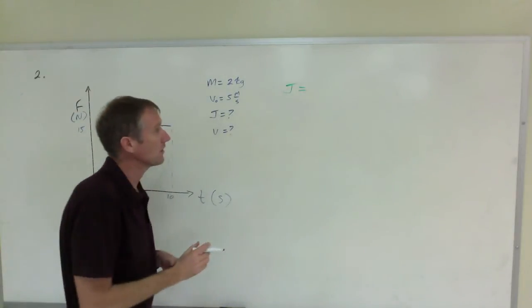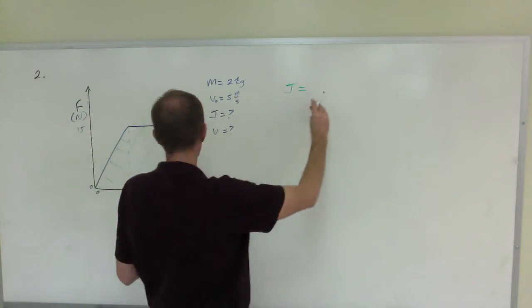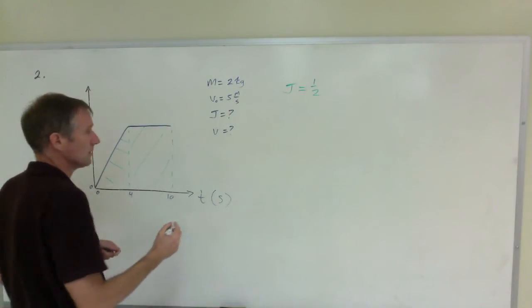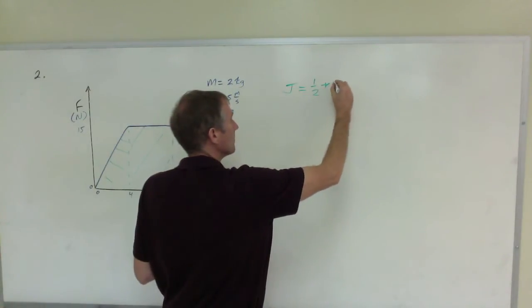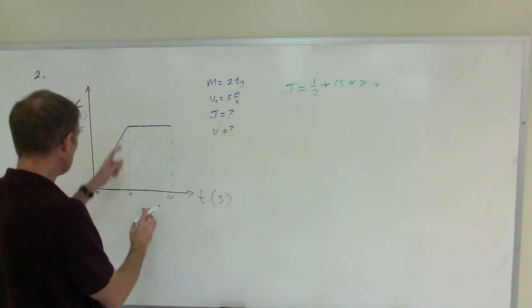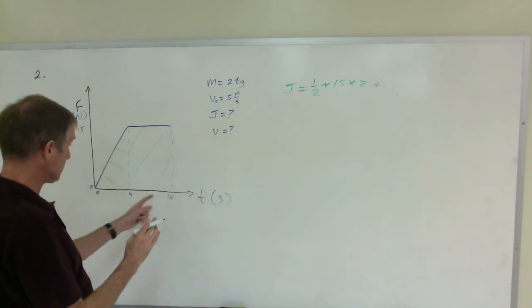So impulse, we're going to use J for impulse. That will be one-half—this is a triangle—one-half times 15 times 4, plus the area of the rectangle, which will be 15 times 6.